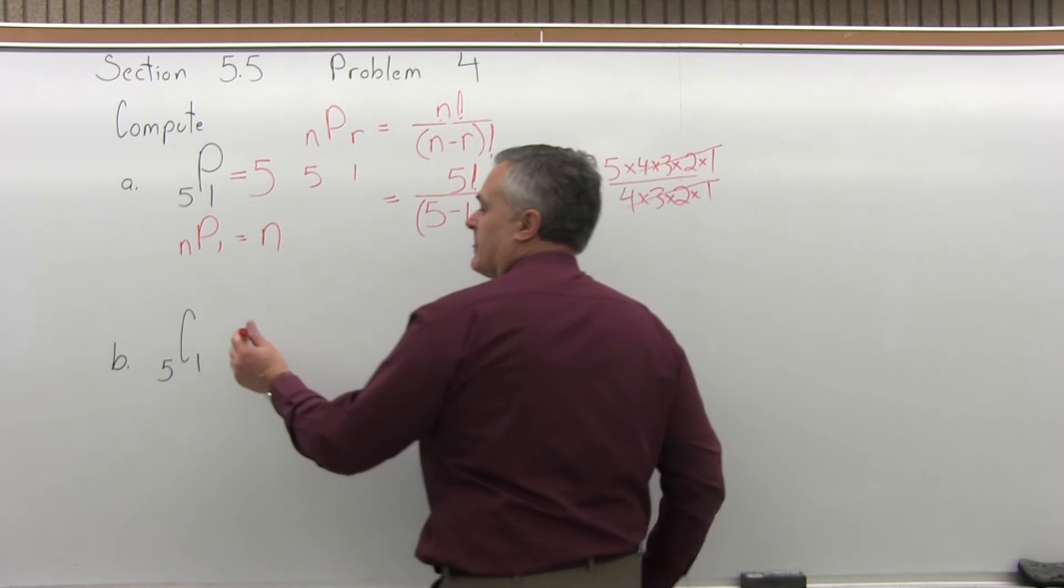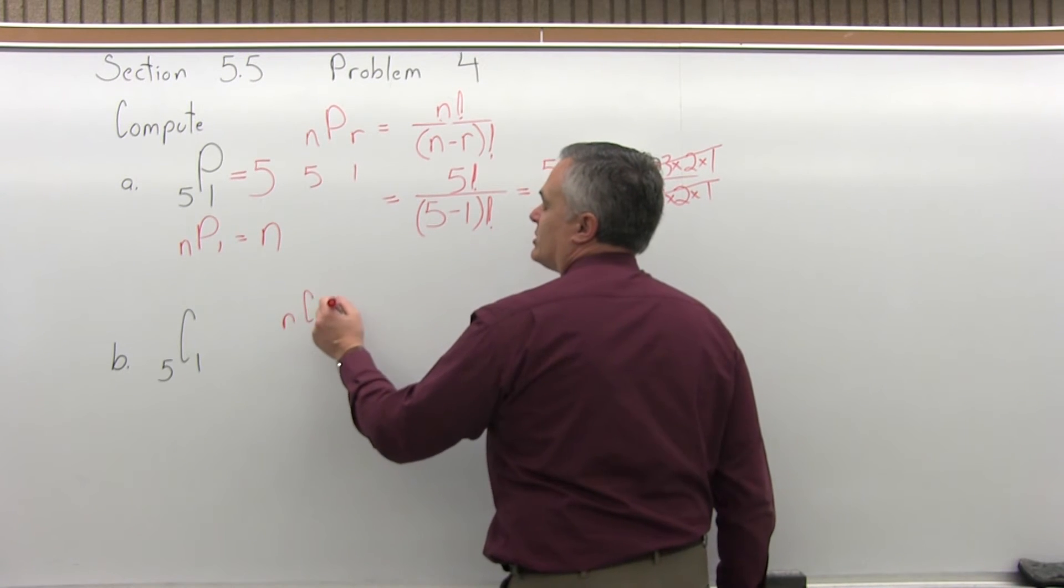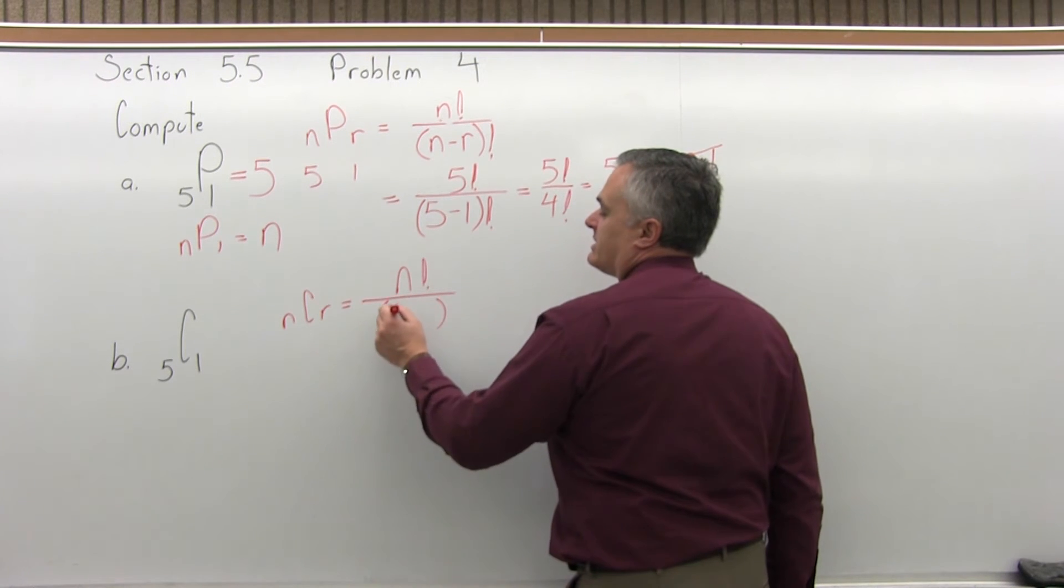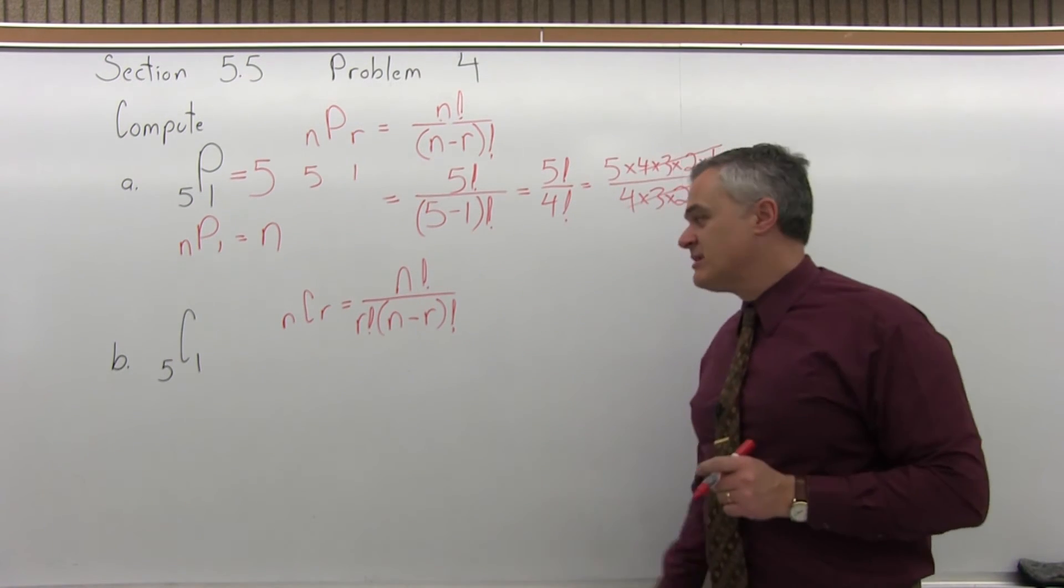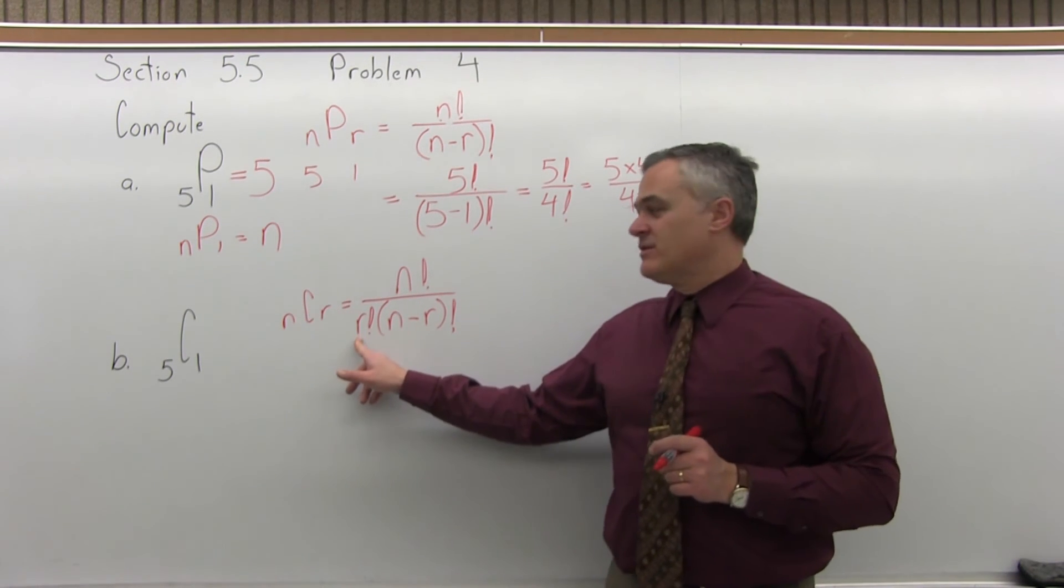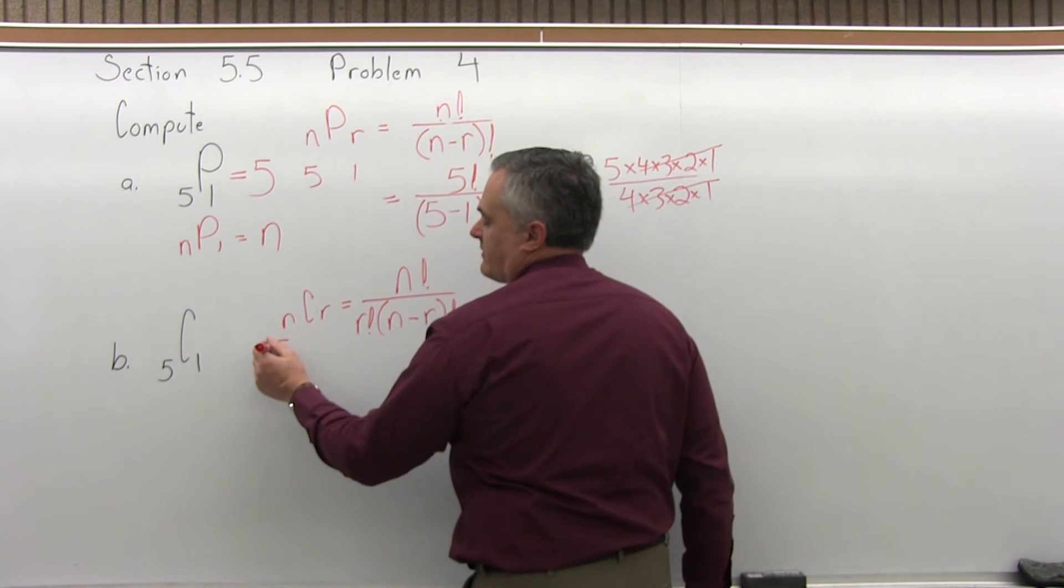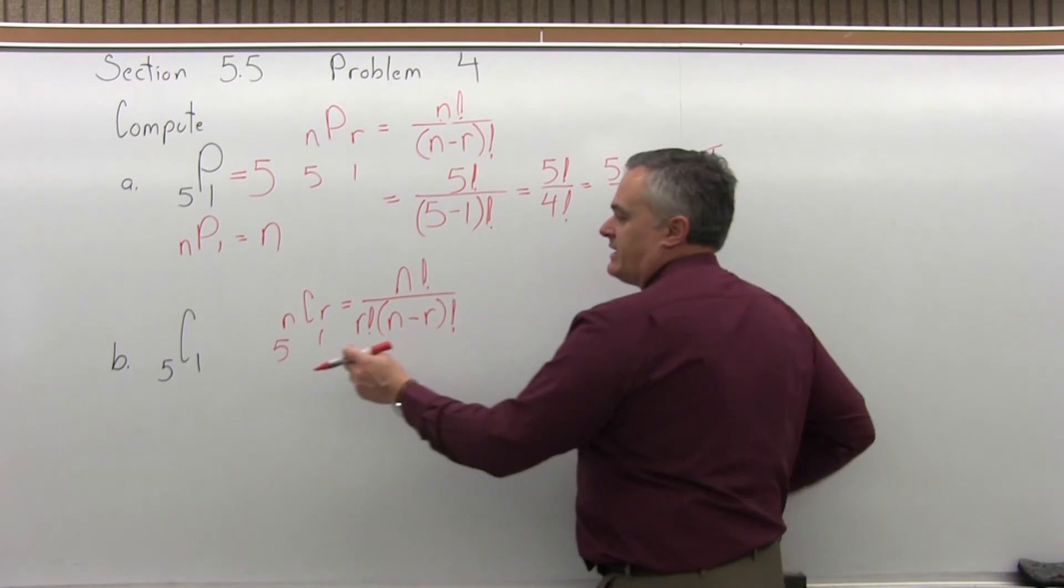So the combination formula is n combination r equals n factorial over, in parentheses, n minus r factorial. And in front of the parentheses, you have times r factorial. So it's pretty similar with this extra addition of the r factorial. So again, the n is the larger value for this problem is 5. The r is the smaller value for this problem 1.